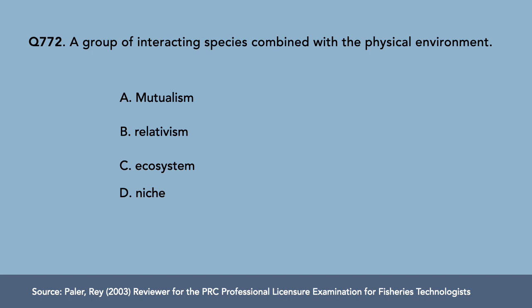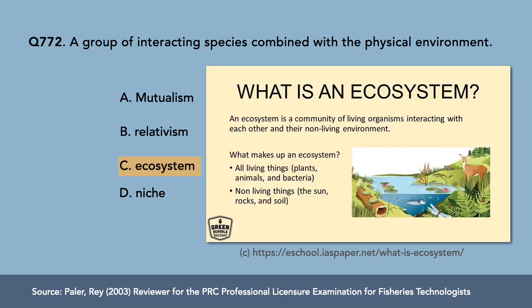Question 2: A group of interacting species combined with a physical environment — A) mutualism, B) relativism, C) ecosystem, D) niche. The correct answer is letter C, ecosystem.